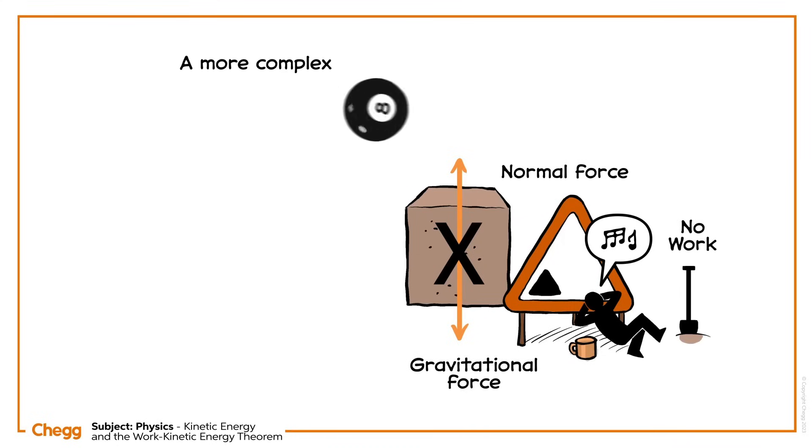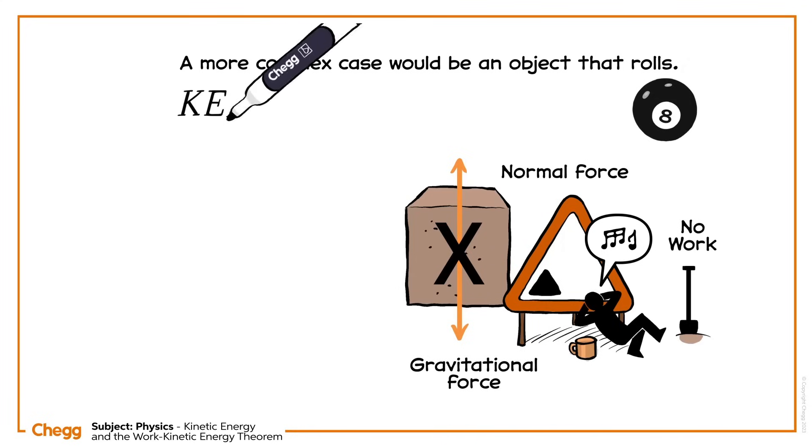A more complex case would be an object that rolls. In that case, we'd need to take rotational kinetic energy into account. The total kinetic energy is the sum of the translational and rotational kinetic energies of the object.